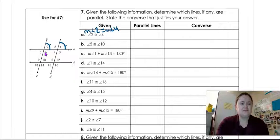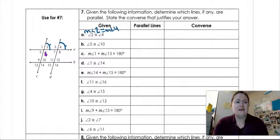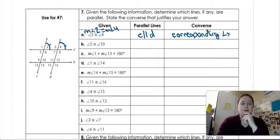So if we're looking here, this makes A our transversal, which would make C and D parallel. And these are, on C and D, these are corresponding angles. So I would say that C is parallel to D, and the converse that we're using is corresponding.